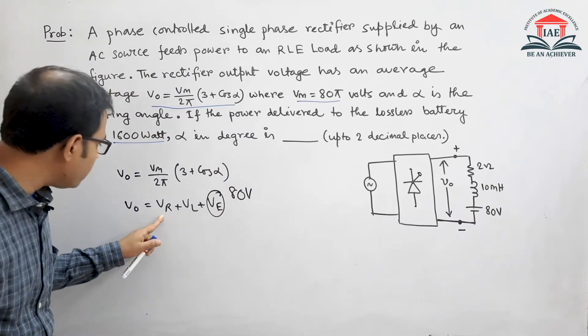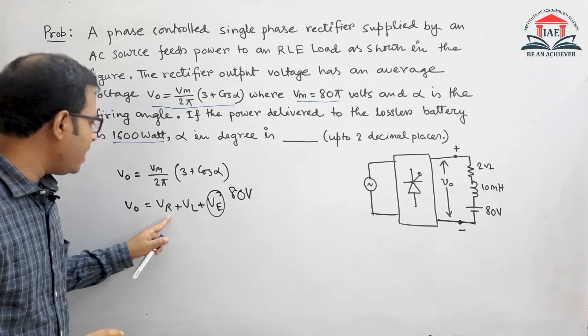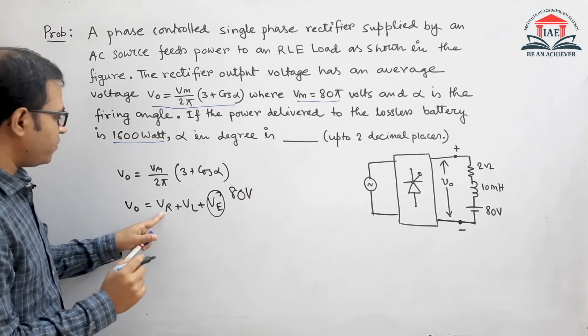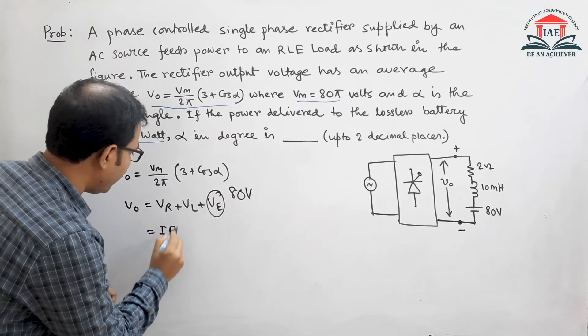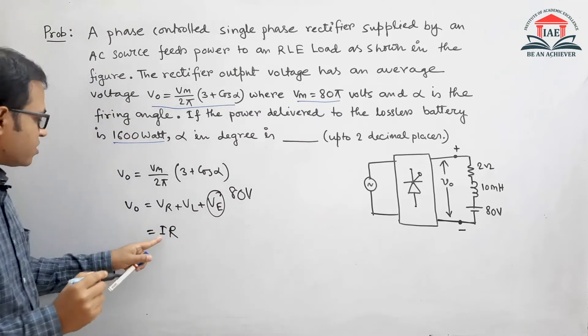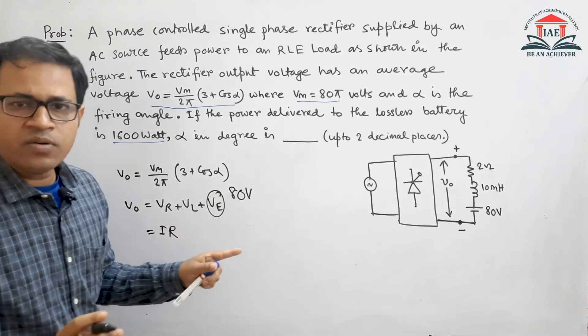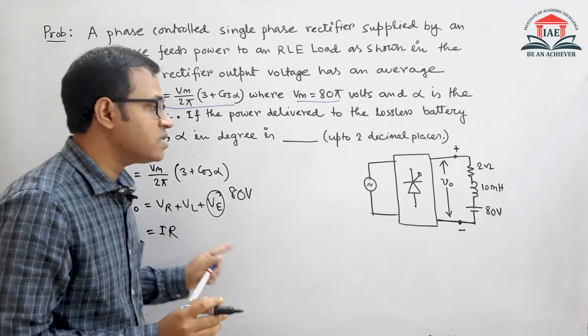But we do not know the voltage Vr and VL. However, we know that the voltage across the resistance must be I into R. I is not known to us, R is known to us. But at this point, you have to find out what is VL.